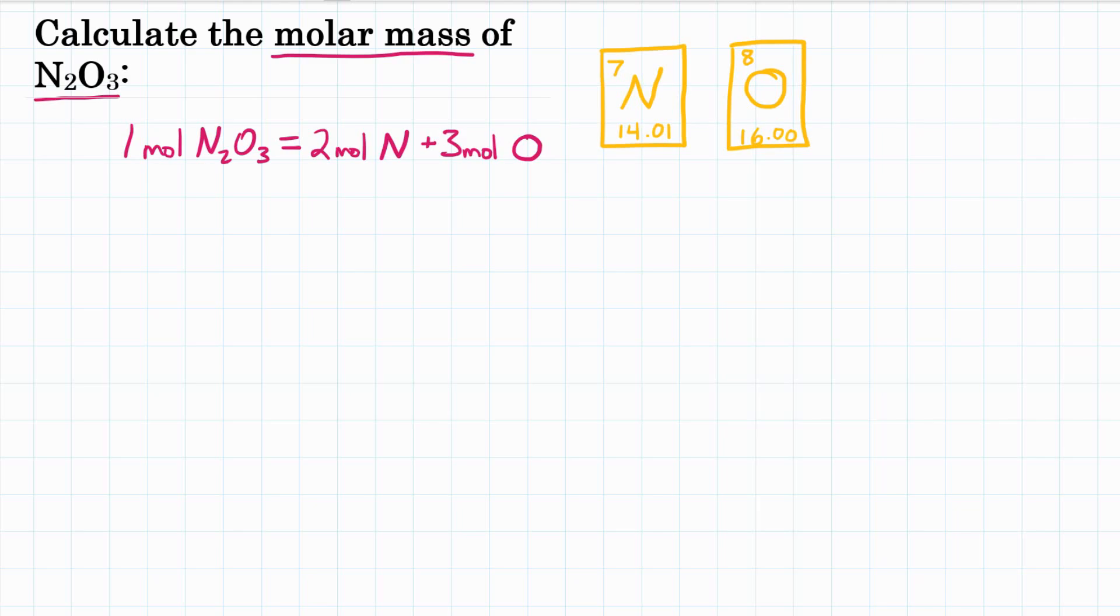So if we can get the masses of two moles of N and three moles of O, add those together, that would be the molar mass of N2O3. So we have two elements.